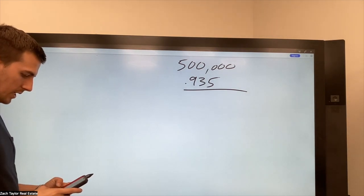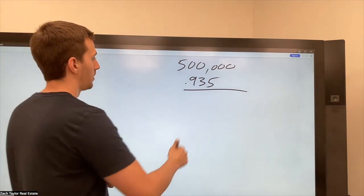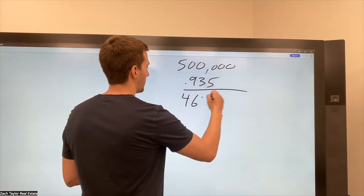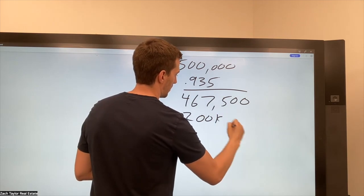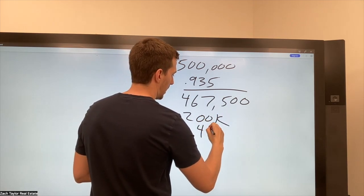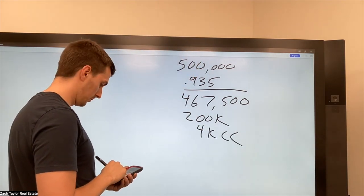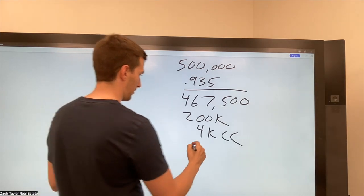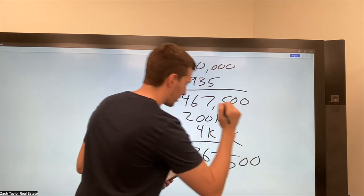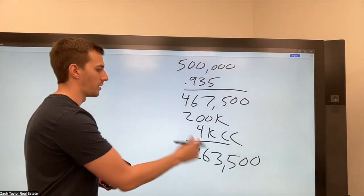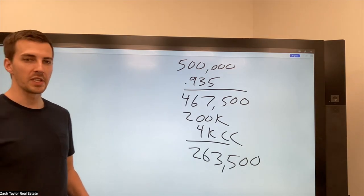So 500,000 times 0.935 equals 467,500, minus 200 mortgage, and 4K in closing costs. So that's $263,500. So let's say they wanted to list for this. And they told me, Zach, we want to make around $250,000. Do you think it's possible?